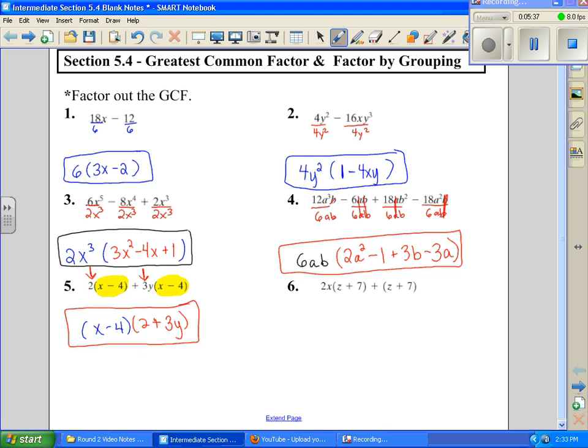And there's nothing more I can do to that one. And likewise, in number 6, whenever my parentheses are identical, that means it's one of the factors. z + 7. And then what is left on the outside of those is going to be the other factor. And there's also a known one. So that's 2x + 1.